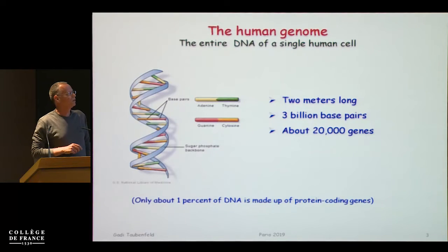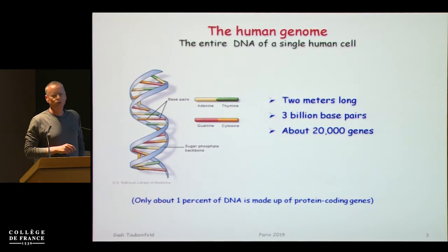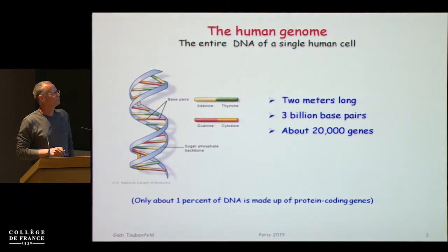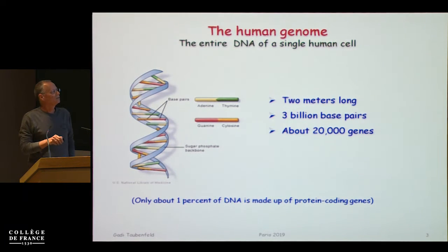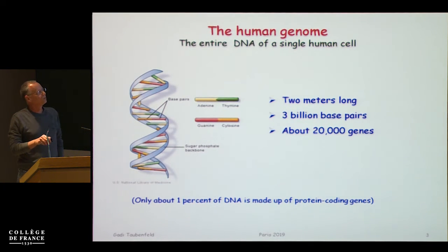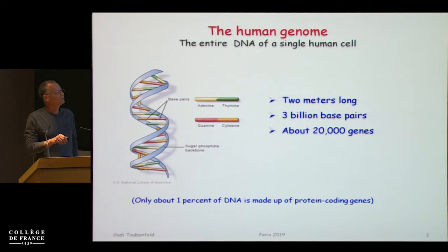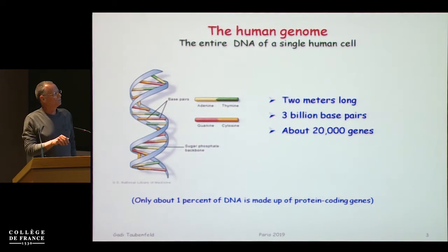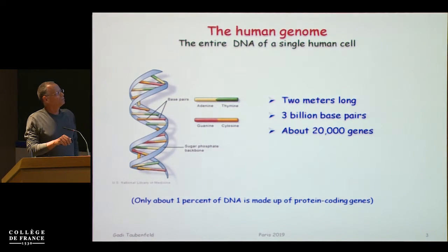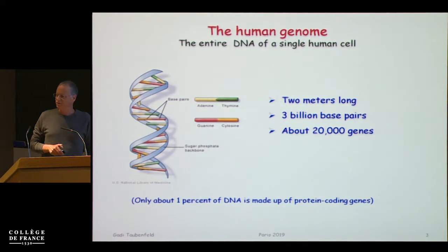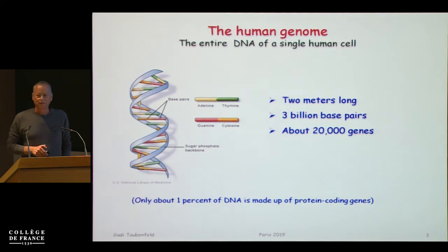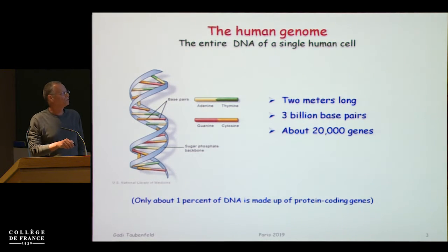Here are three facts about the human genome. It is two meters long. It has three billion base pairs. And it has about 20,000 genes in it.